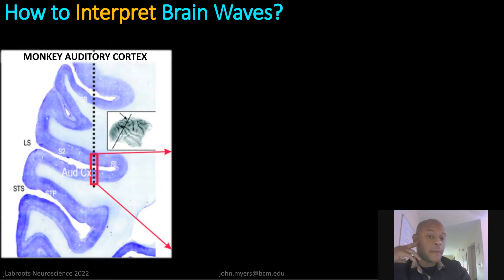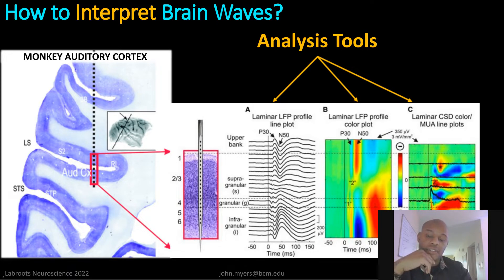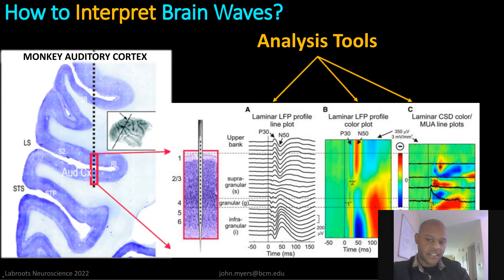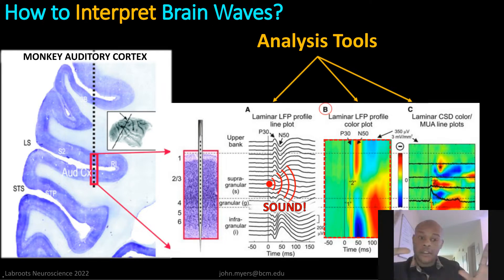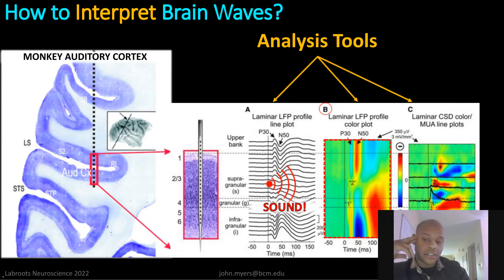So how do we interpret brainwaves? If we take an example where we inserted an electrode into a monkey's auditory cortex, we can use analysis tools to understand the waves themselves. Zooming in on that little patch of cortex, each little dot is a recording contact. If you play a sound, the next panel over in A shows the actual brainwaves. If you play a sound at time zero, you can see the brainwave response to the sound in auditory cortex. Panel B shows that if we make all negative voltages one color and positive voltages another, we can see a spatial distribution of these waveforms across the cerebral space.